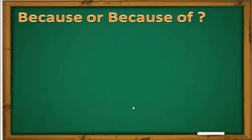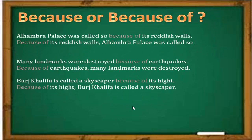When expressing cause, you can use 'because' or 'because of,' but there is a slight difference — you cannot use them interchangeably. Consider these examples: 'Alhambra Palace was called so because of its reddish walls.' Compare this to: 'Alhambra Palace was called so because the color of its walls is reddish.' After 'because of' there is no verb — it is followed by a phrase. After 'because' there is a verb — it is followed by a clause.